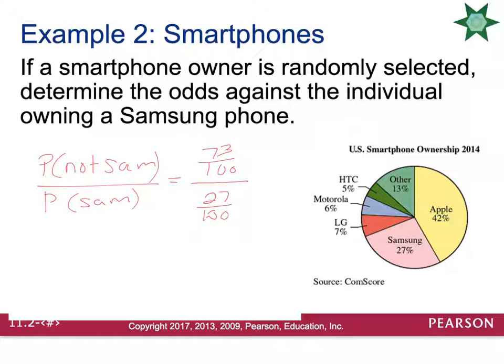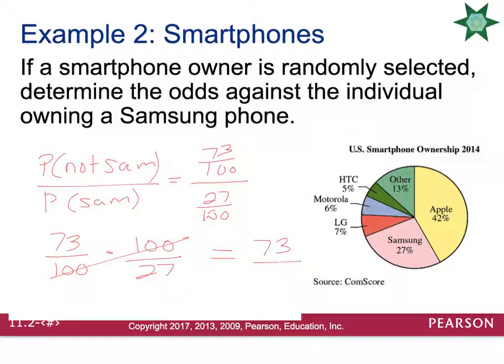Using copy-dot-flop will cancel the 100s, so the odds against owning a Samsung are 73 to 27.